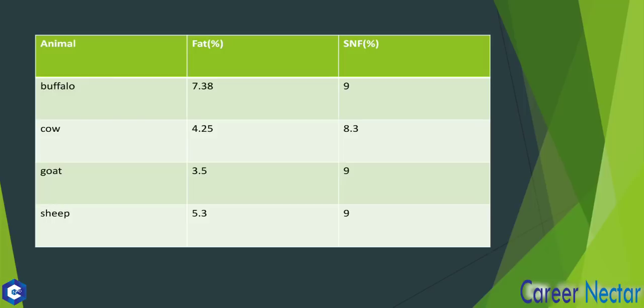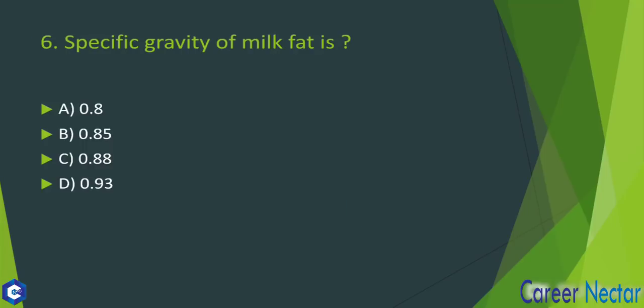If you have already appeared in this paper, you will know how important these slides are. Another question: What is the specific gravity of milk fat? Specific gravity is a ratio — the density of a substance compared to the density of a reference substance. If we compare milk fat with water, 0.93 is the specific gravity of milk fat. The answer to this question is option number D.